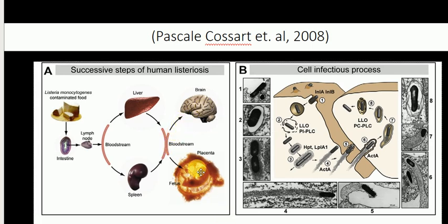It also crosses the placental barrier, entering the placenta. So these are the successive steps involved in human listeriosis: food contaminated with Listeria enters the intestine, crosses the intestinal barrier, is transported to the liver and spleen, and via the bloodstream enters the brain and also the placenta.